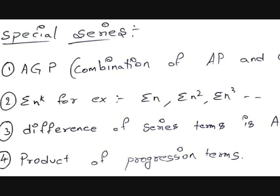After discussing arithmetic progression and geometric progression, you may have a small doubt: what if we combine them? What if we combine arithmetic and geometric progressions — what type of progression will we get? Arithmetic-geometric progression, or AGP, means multiplying an AP with a common ratio. That is called AGP.